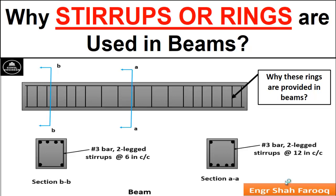Hello dear friends, welcome back to your YouTube channel Civil Engineer. In beams, two types of reinforcements are provided: one is longitudinal reinforcement, which is provided in the form of longitudinal bars to resist flexural stresses or bending moment. Along with longitudinal reinforcement, transverse reinforcement is also provided in the form of rings known as stirrups.